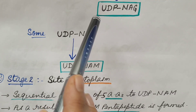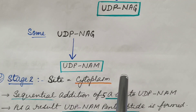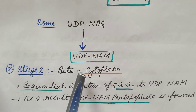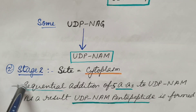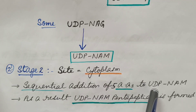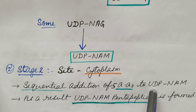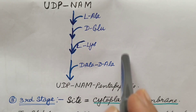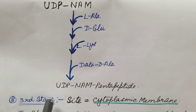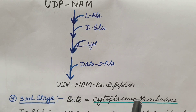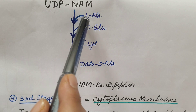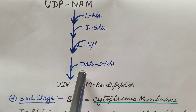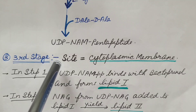Some UDP-NAG is then converted into UDP-NAM. So in stage one, we obtain two sugar-linked precursors: UDP-NAG and UDP-NAM. In stage two, which also occurs in the cytoplasm, five amino acids are sequentially added to UDP-NAM, forming UDP-NAM pentapeptide. These five amino acids are L-alanine, D-glutamine, L-lysine, D-alanine, and D-alanine.